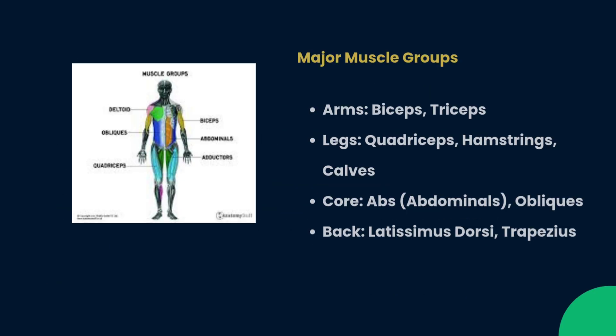Major muscle groups include: in the arms — biceps and triceps; in the legs — quadriceps, hamstrings, and calves; in the core — abdominals and obliques; and at the back — latissimus dorsi and trapezius. Including these groups when explaining the muscular system will make your answer more complete.